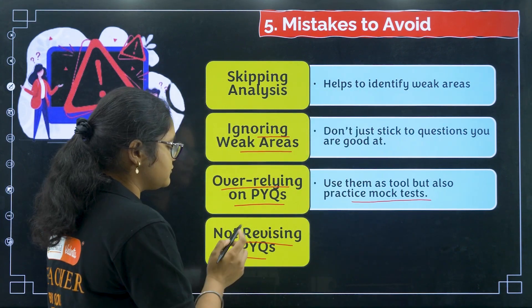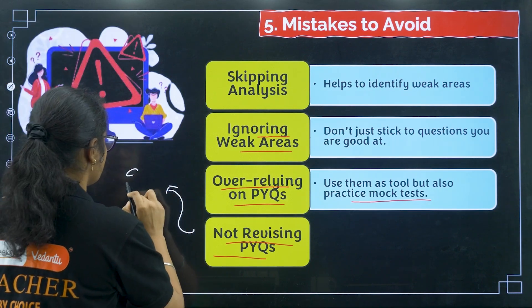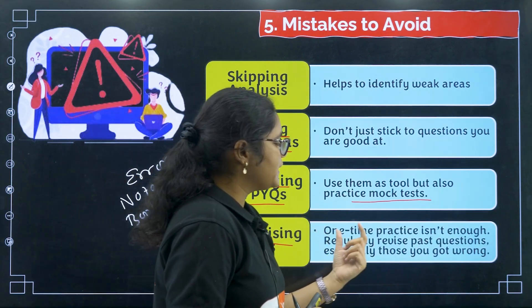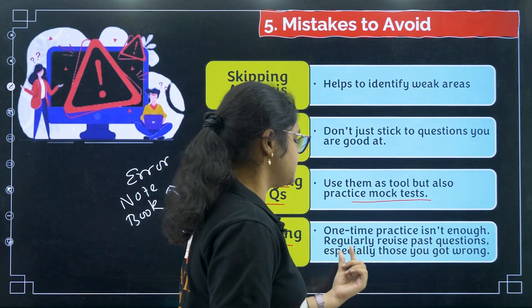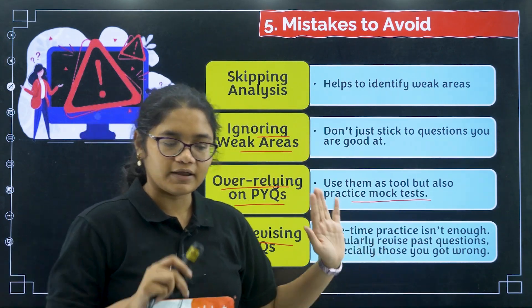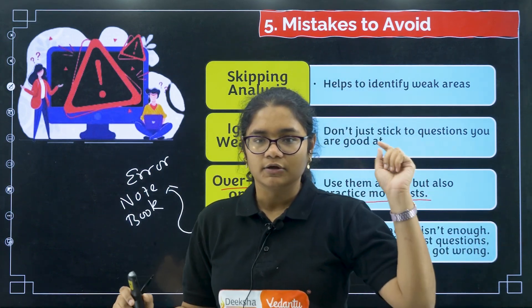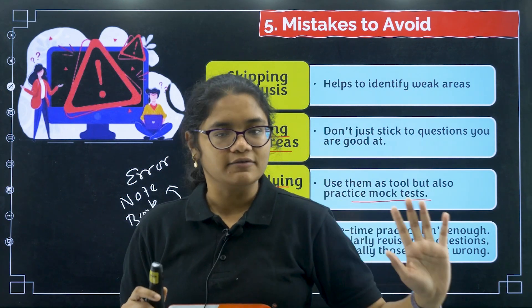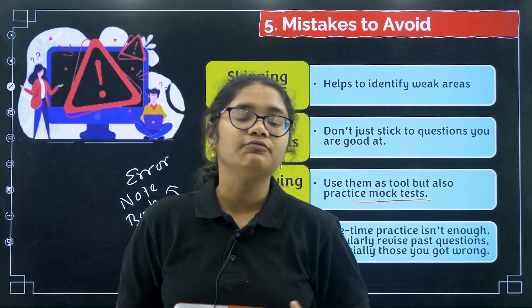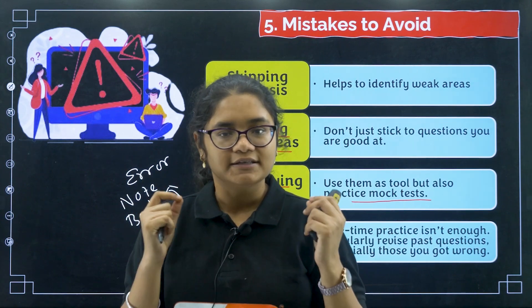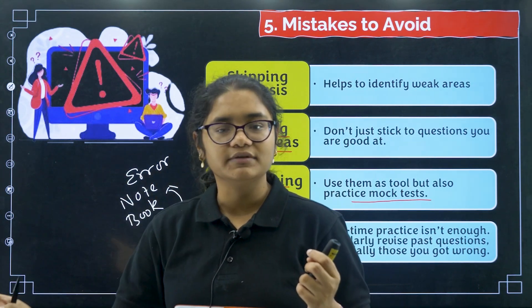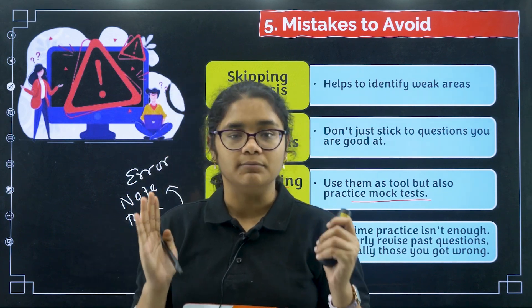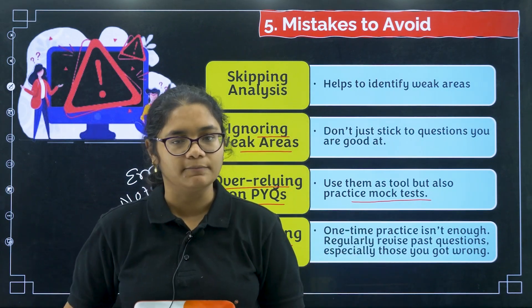The fourth mistake is not revising PYQs. One-time practice is not enough — regularly revise past questions, especially those you got wrong, using your error notebook. Please seriously make an error notebook. Today's chapter is aldehydes, ketones, and carboxylic acids — first solve it yourself using your book or our channel's PYQ videos, then check the solutions, note down the mistakes, note the wrong questions, and later solve them again. If you follow these steps and avoid these mistakes, you will definitely improve — otherwise you will be doing everything but seeing no improvement.